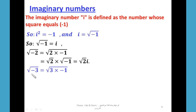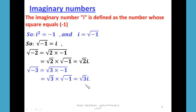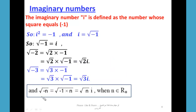Also, √(-3) = √(3 × -1) = √3 × √(-1) = √3·i. In general, √(-n) = √(-1 × n) = √n·i, where n belongs to ℝ⁺.